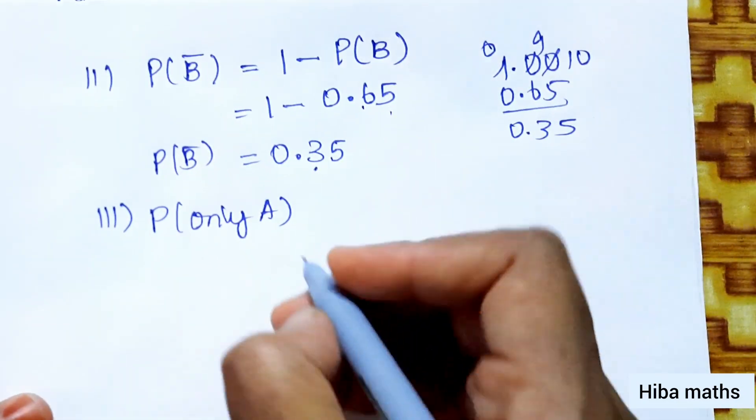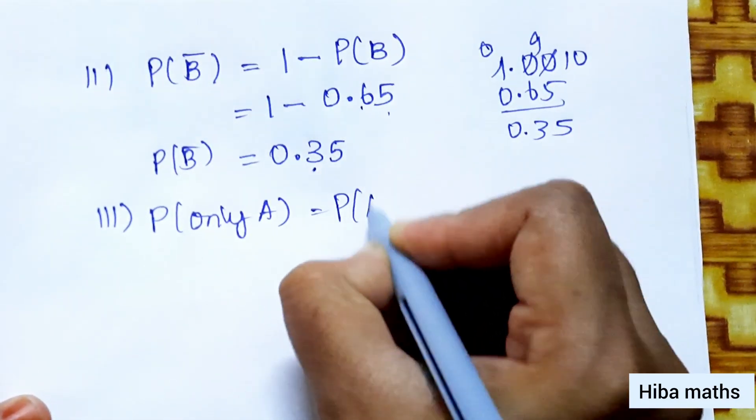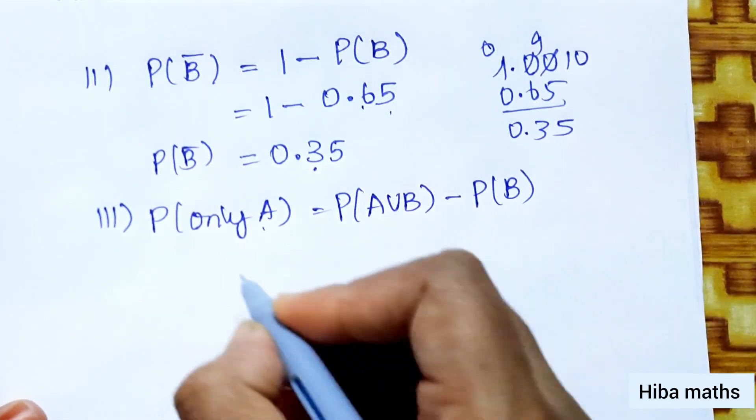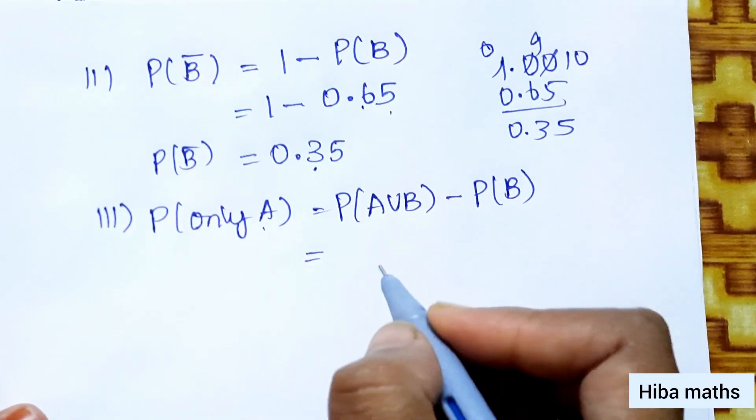Next is P of only A. Only A means P(A union B) minus P(B). First subdivision is only B.